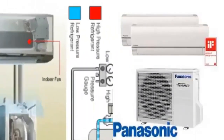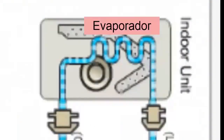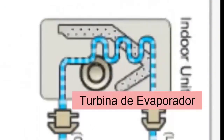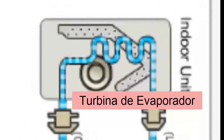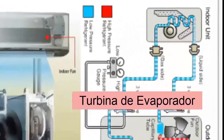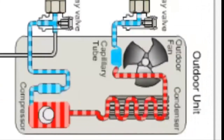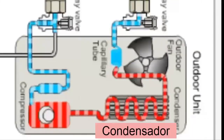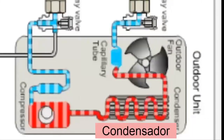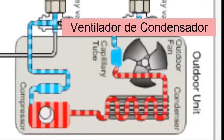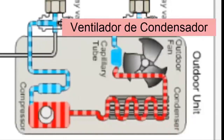The parts of an air conditioner that works with R32 refrigerant gas are the same as a conventional one. In the indoor unit, located inside the premises, we have: 1. Evaporator; 2. Evaporator turbine. In the outdoor unit, located outside the premises, we have: 3. Compressor; 4. Capacitor; 5. Condenser fan; 6. Capillary tube.